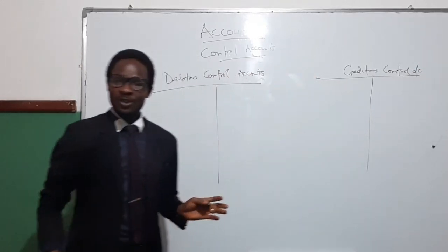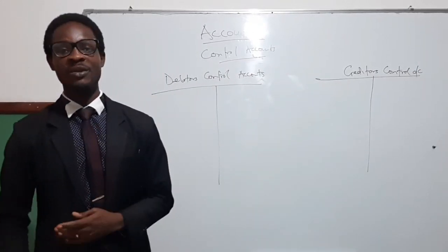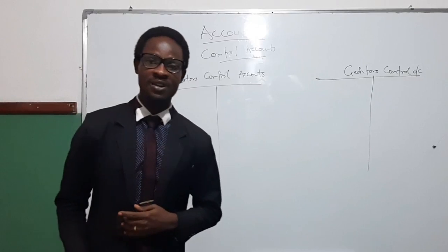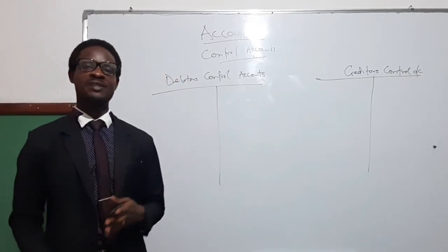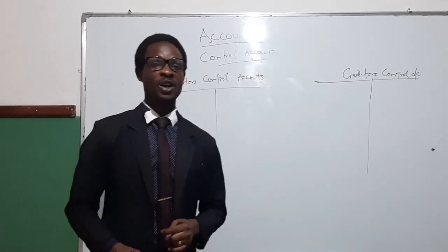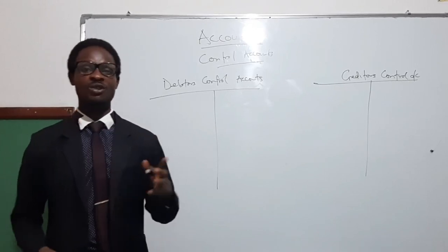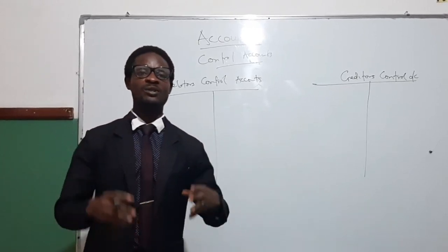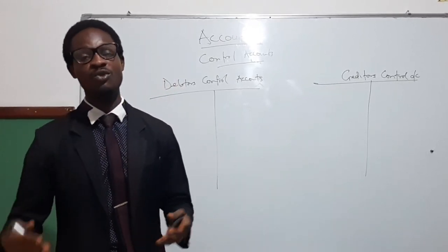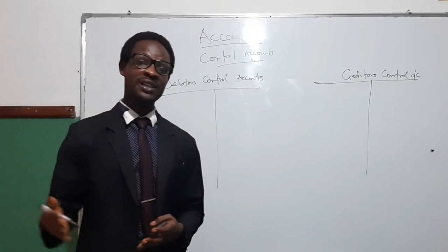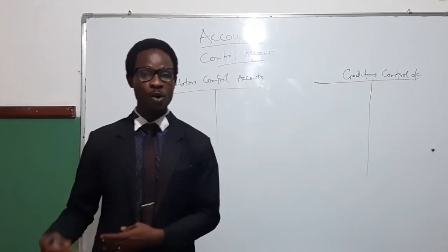The debtors control account is the same thing as the trade receivables control account, or customers control account, or sales ledger control account, because debtors are individuals the business had sold to on credit, which means they were owing.